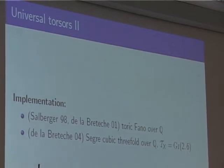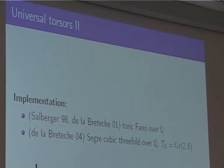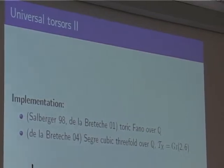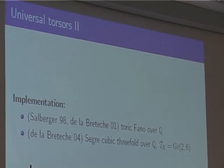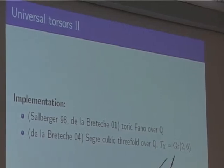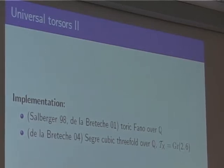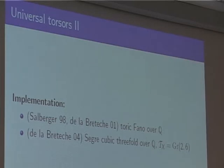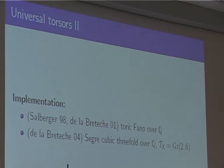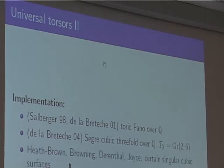You can visualize the Segre cubic threefold by taking P³ and blowing it up in five points in general position — it is rational, but it embeds into projective space as the cubic hypersurface Σ xⱼ³ = Σ xⱼ = 0 for j from 0 to 5, a very symmetric cubic threefold. One can count rational points on that via a lift to the universal torsor, which in this case turns out to be a Grassmannian. You take G(2,6) ≅ G/P, quotient out by a torus on the other side, and what's left has no homogeneous structure.